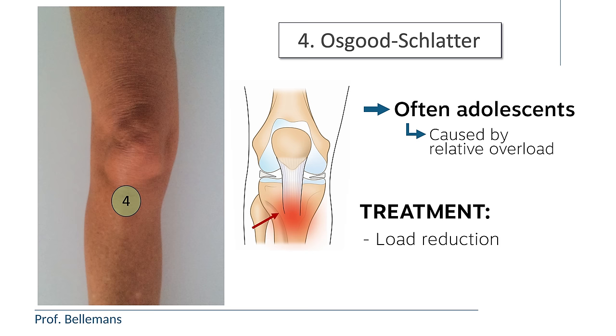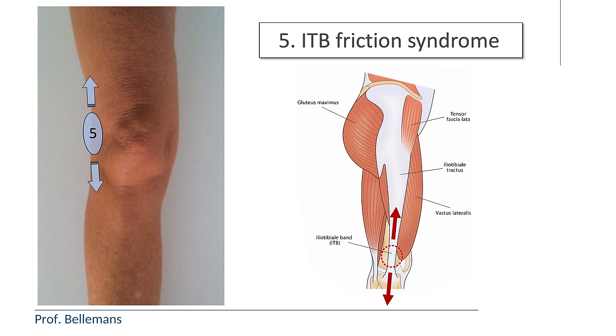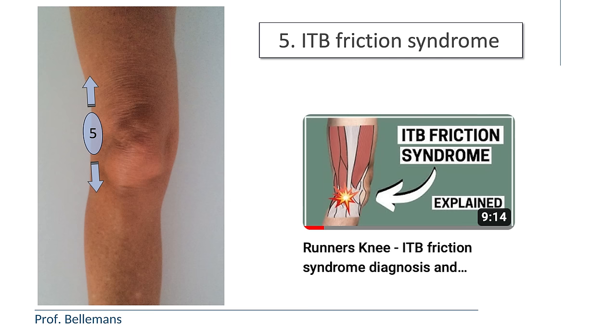5. Iliotibial band friction syndrome. ITB friction syndrome causes pain on the lateral or outer side of the knee and can sometimes radiate up and down over the outside of the leg. If you have an ITB friction problem, please have a look at a separate video where more detail is provided on what you can do about it.